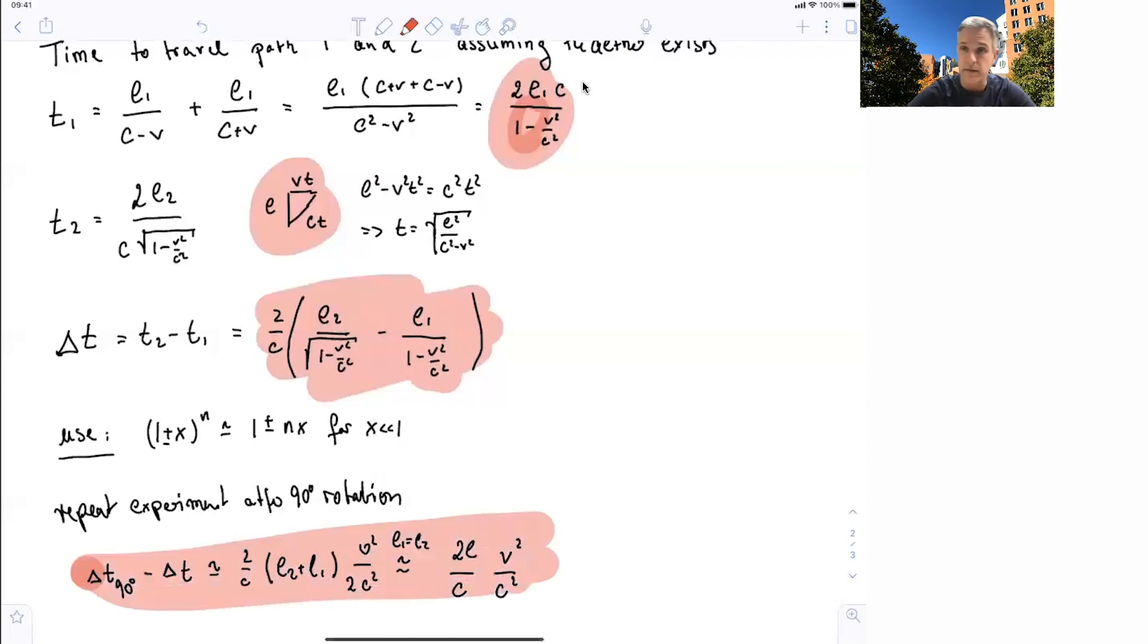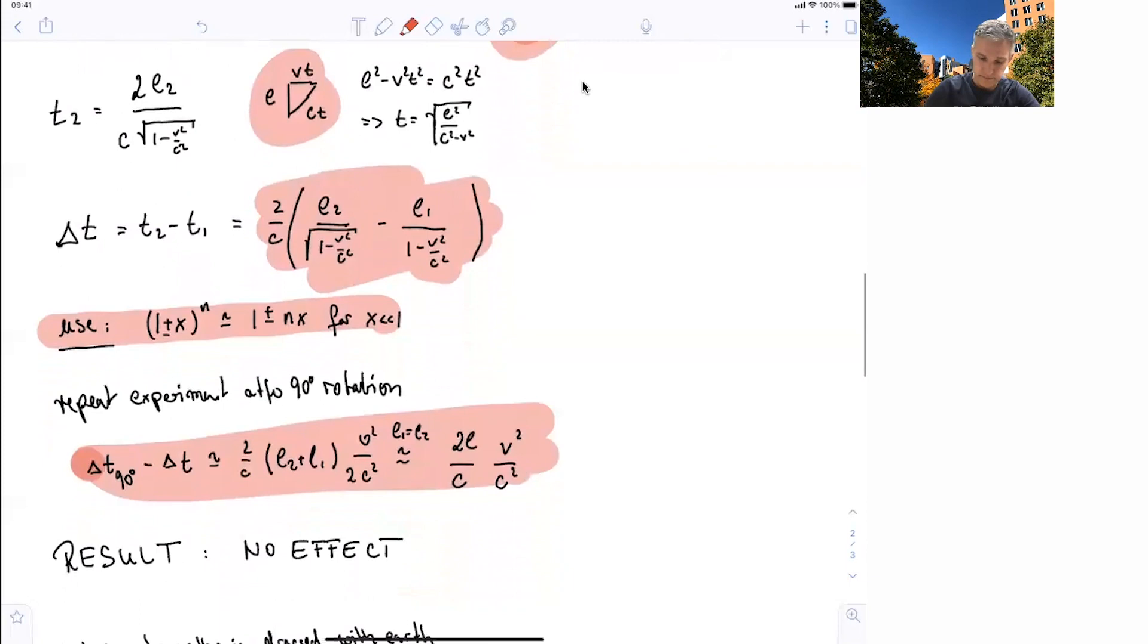there is this v squared over c squared dependence. I used a little trick to simplify the square root, as I use this 1 plus or minus x to the nth power is about 1 plus minus n times x for x very small. And since the velocity of ether is presumed to be small compared to the speed of light, that's a good approximation.